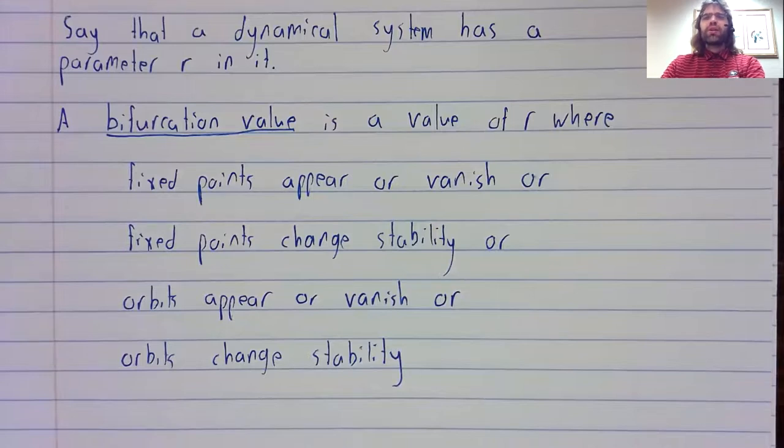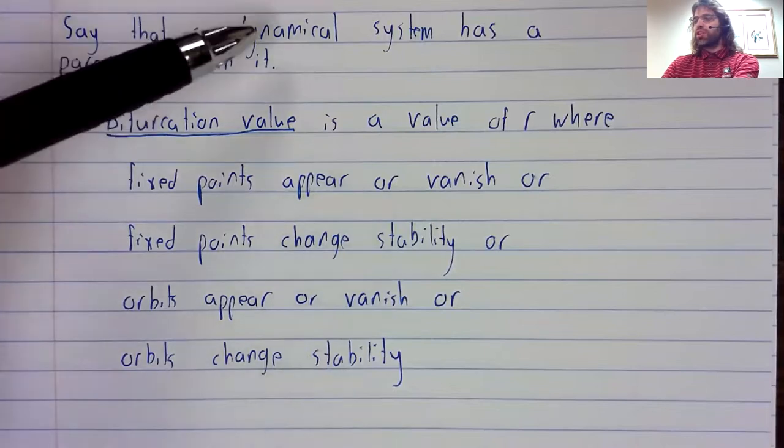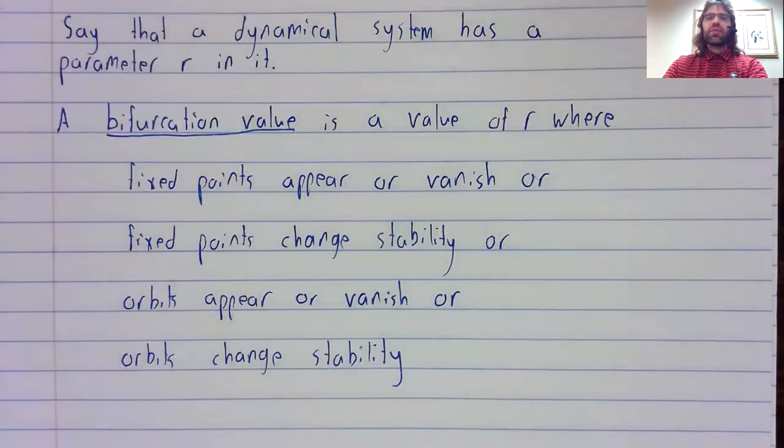Let me remind you, by the way, that we also talk about bifurcations in differential equations. It's not just a dynamical systems thing. That happened way back at the beginning of the course, so you might not really remember it very clearly. But in the context of a population model, a fish population model where we were harvesting fish, we talked about fixed points appearing and disappearing in differential equations as well.